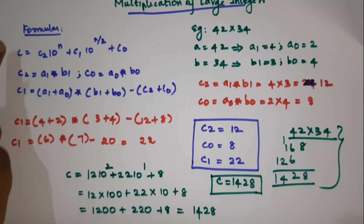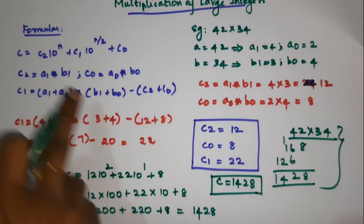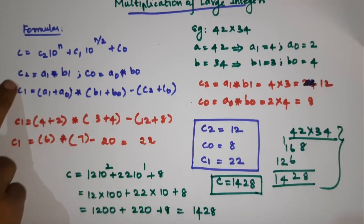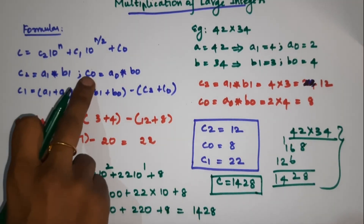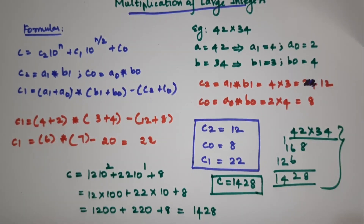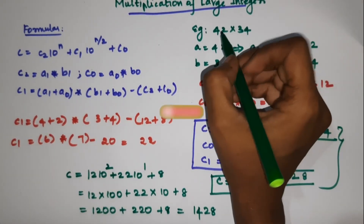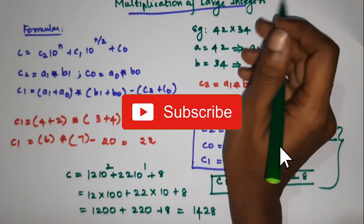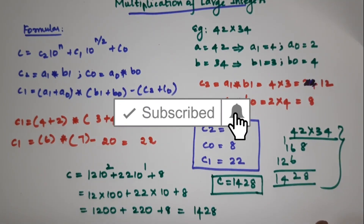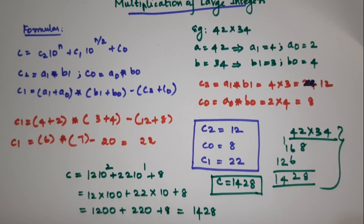Based on the formula using C, C2, C1, and C0 values, the problem is easy to solve. If you have any numbers, apply this formula to get the value. I hope you are clear. Now we will see the next video. Subscribe to the channel. Thank you.